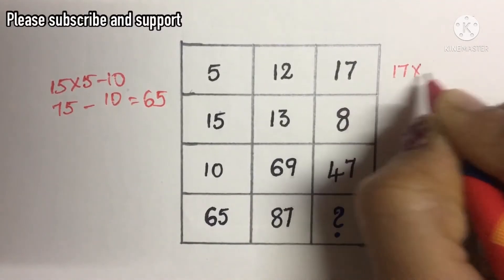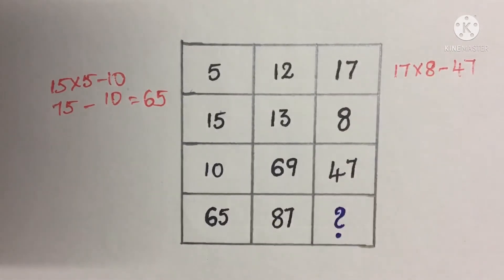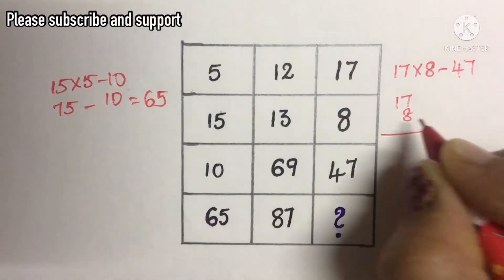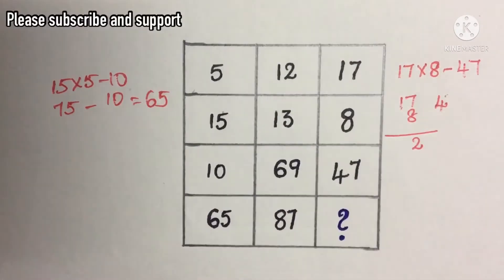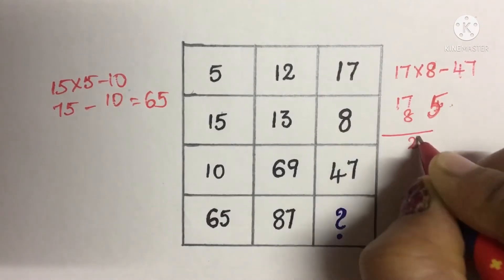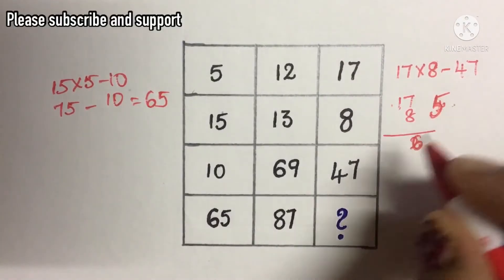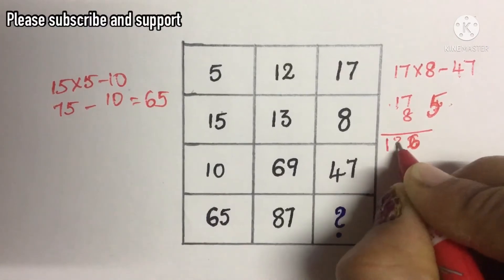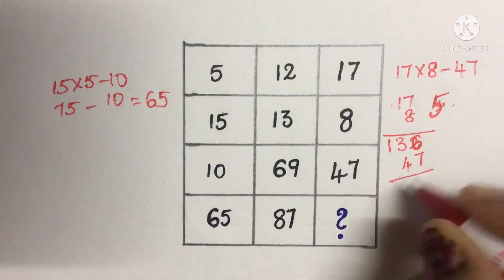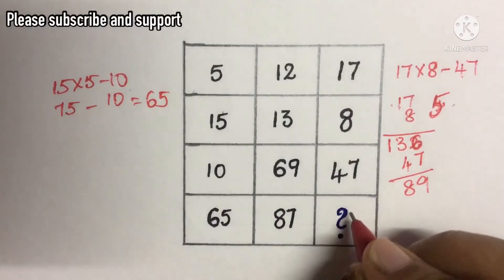Next: 17 × 8 − 47. We get 17 × 8 = 136. Then 136 minus 47 equals 89. So 89 is our answer.